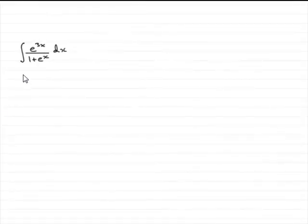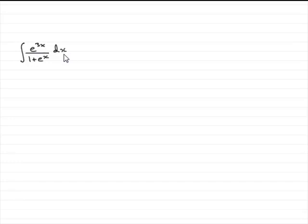This is going to be quite a lengthy integral. We've got to integrate e to the 3x over 1 plus e to the x with respect to x using a substitution, so we know it's going to be integration by substitution.